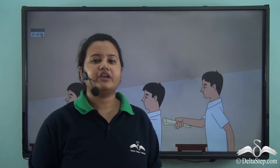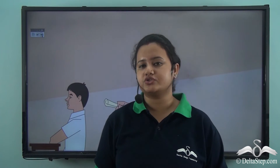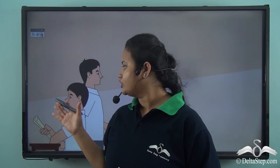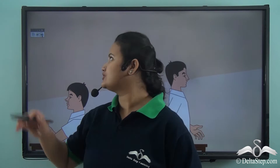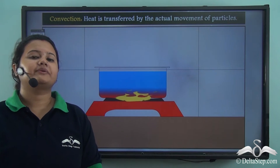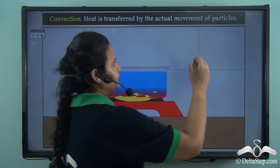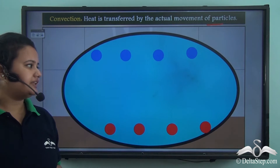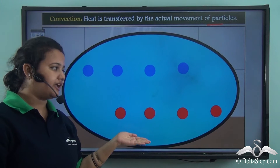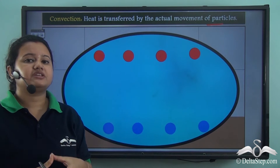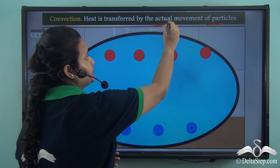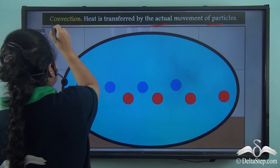Now there is a second way to transfer the paper to the student on the first bench — you can get up from your place and walk over to deliver it directly. Similarly, heat is also sometimes transferred by the actual movement of particles. In this video we can see that hot water molecules rise up while cold water molecules sink, are heated again, and rise — this process continues. Heat transferred by the actual movement of particles is called convection.